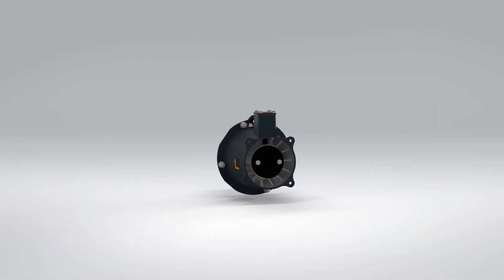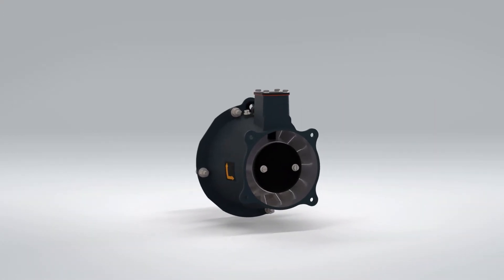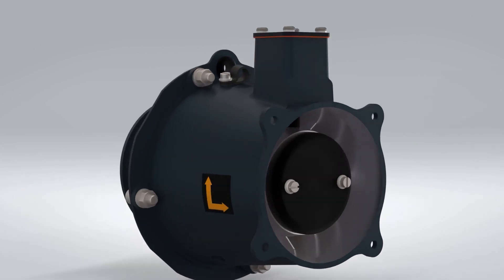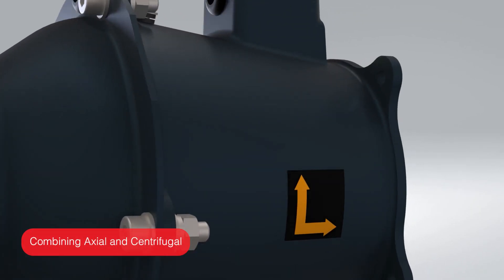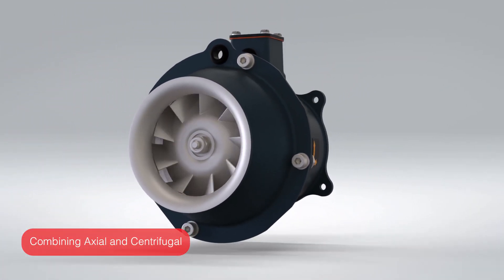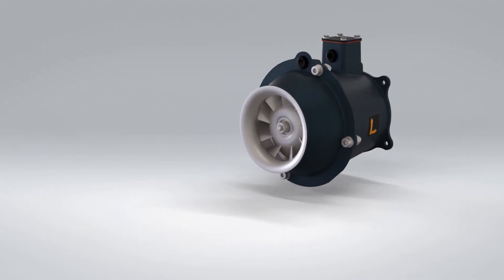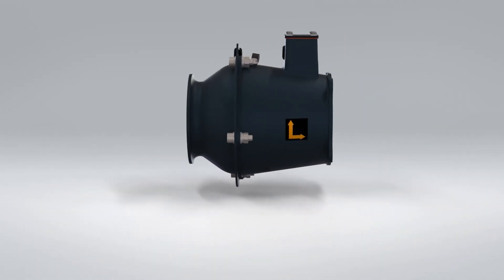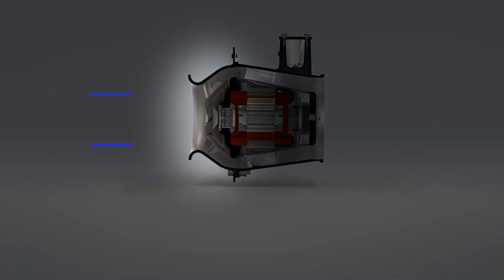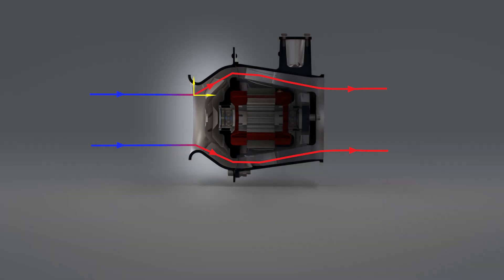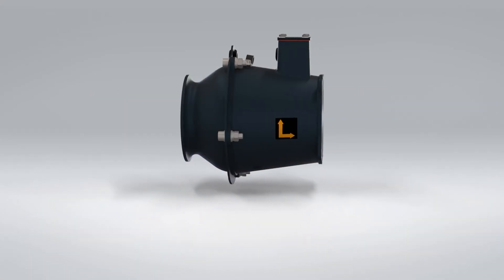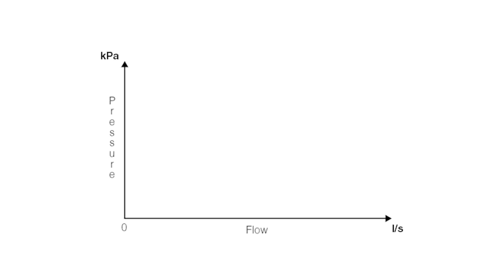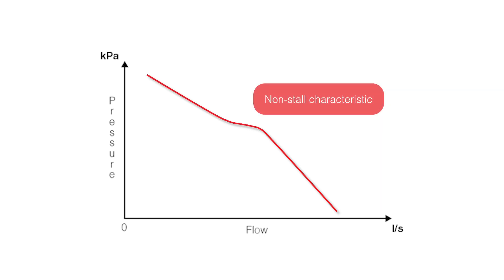That brings us to the mixed-flow fan, and as its name suggests, this type of fan combines elements of an axial fan and a centrifugal fan. The fan uses an efficient aerofoil blade like an axial fan, but wider and arranged around a conical hub. Combining these features generates a flow typical of an aerofoil blade, but forcing the air to flow past the cone introduces an axial and radial characteristic to the airflow. The net result is a fan capable of producing high airflow whilst dealing with high pressures caused by upstream airflow restrictions.